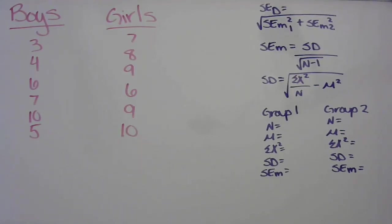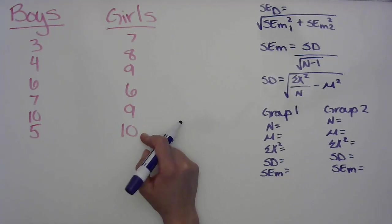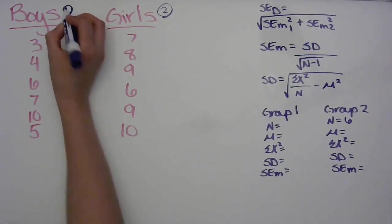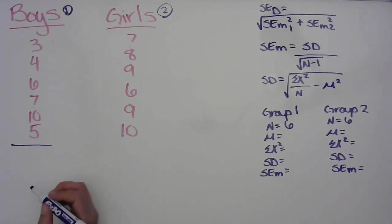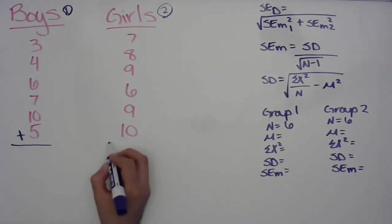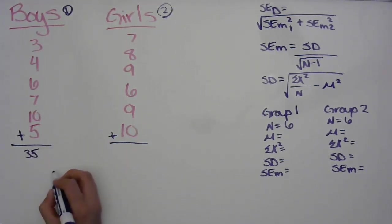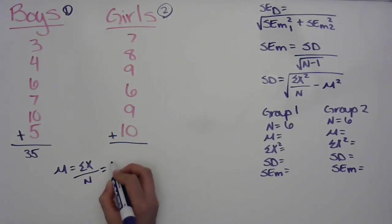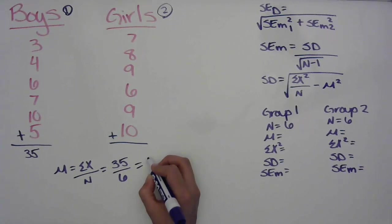First, let's find the n count. We have one, two, three, four, five, six for the girls — that's group two — and one, two, three, four, five, six for the boys — group one. Now let's figure out the mean for group one. We add all of the scores together, which gives us 35. The mean is the sum of raw scores divided by n, so 35 divided by 6 gives us a mean of 5.83.